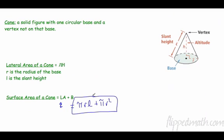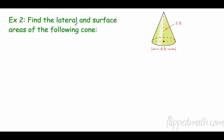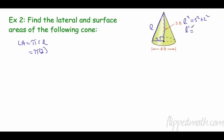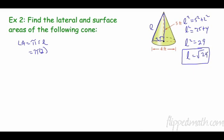Let's find the lateral and surface area of a cone. Lateral area equals πrl. The diameter is 4, so the radius r = 2. The slant height isn't given, so I use the Pythagorean theorem: l² = 5² + 2² = 25 + 4 = 29, so l = √29. The lateral area is π times 2 times √29, which equals 2√29 π.